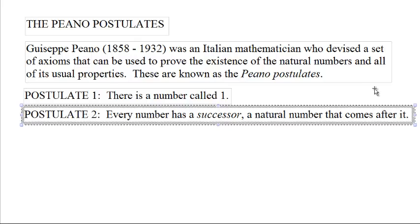Postulate 2: Every number has a successor — a natural number that comes after it. So every number has a number that comes after it. Now you might think, well, that should be enough, right? The number that comes after 1 is 2, the number that comes after 2 is 3, and so on. But there could be problems.